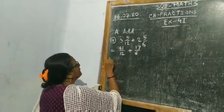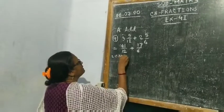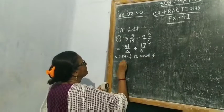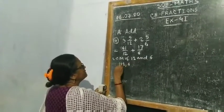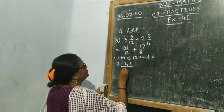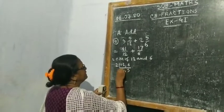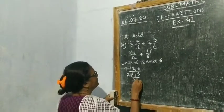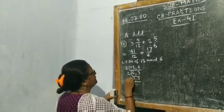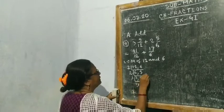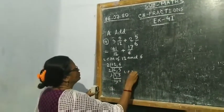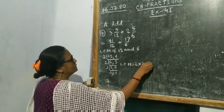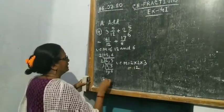Now you have to take the LCM of 12 and 6. I shall use the repeated division method. First divide them by 2: giving 6 and 3. Again divide by 2: giving 3 and 3. Again divide by 3: giving 1 and 1. So LCM is equal to 2 into 2 into 3, which is 12.